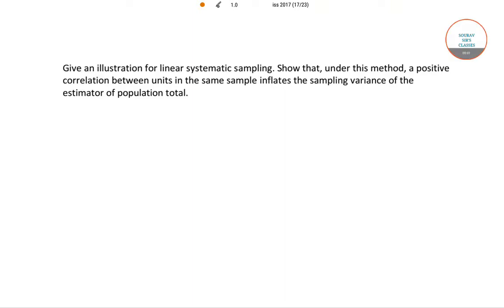Hello students, welcome to Solve Cells classes. In this video I will be solving the following question from ISS 2017 paper 3. Here we have to give an illustration for a linear systematic sampling system and then we have to show that under this method a positive correlation between the units of the same sample inflates the sampling variance of the estimator.